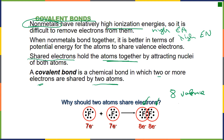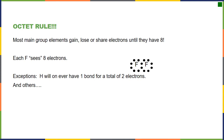They share to obey the octet rule, so everything sees 8 valence electrons, which is stable. Most elements gain or lose electrons until they see 8. In the case of nonmetals, they share electrons until they see a total of 8. So they share until they obey the octet rule.